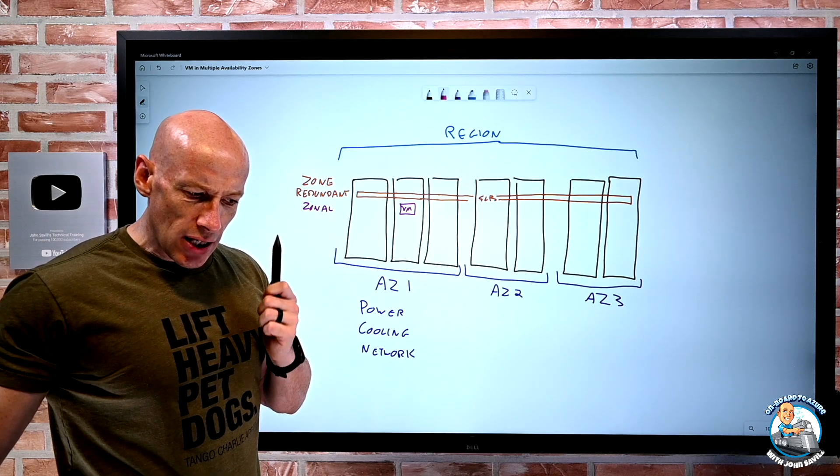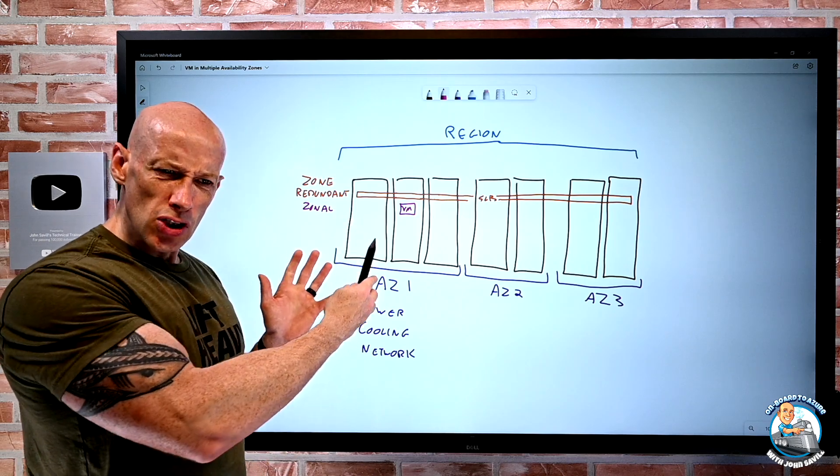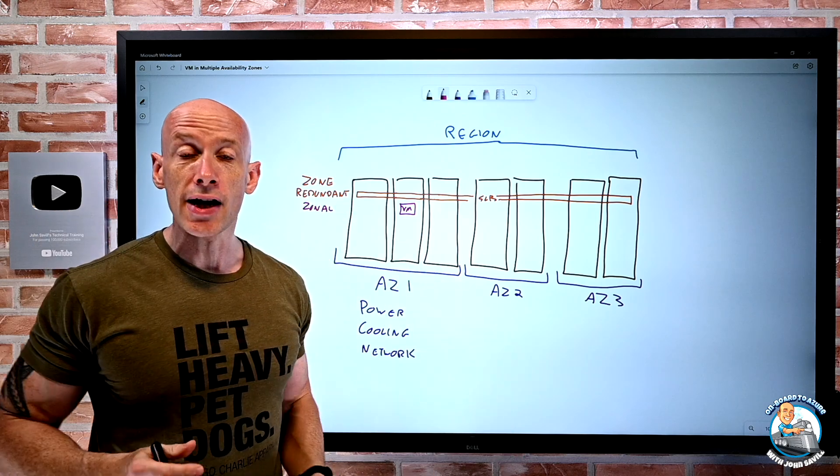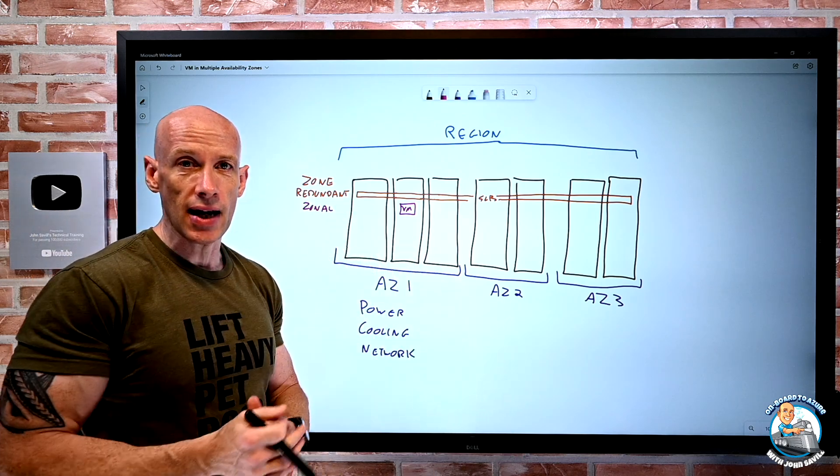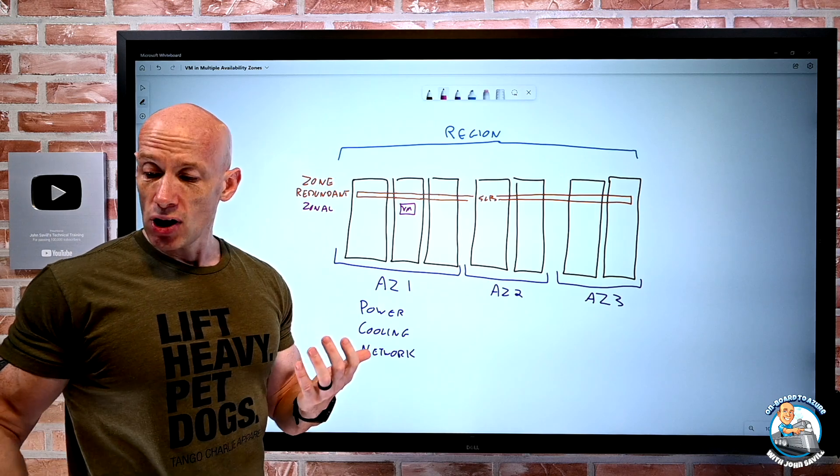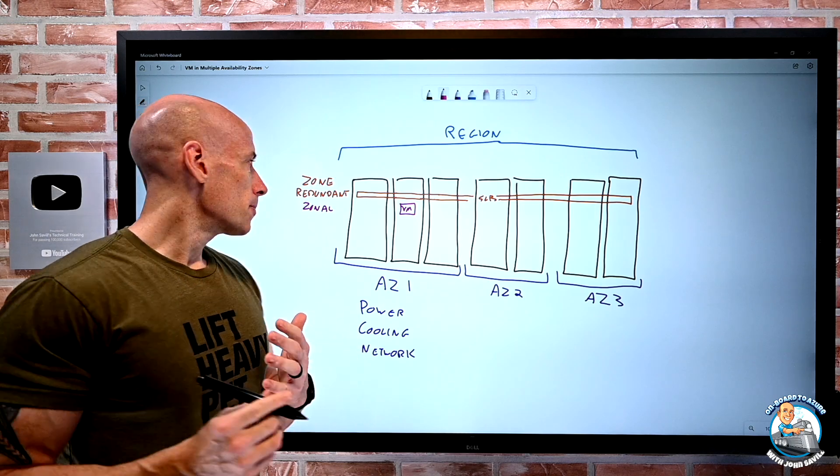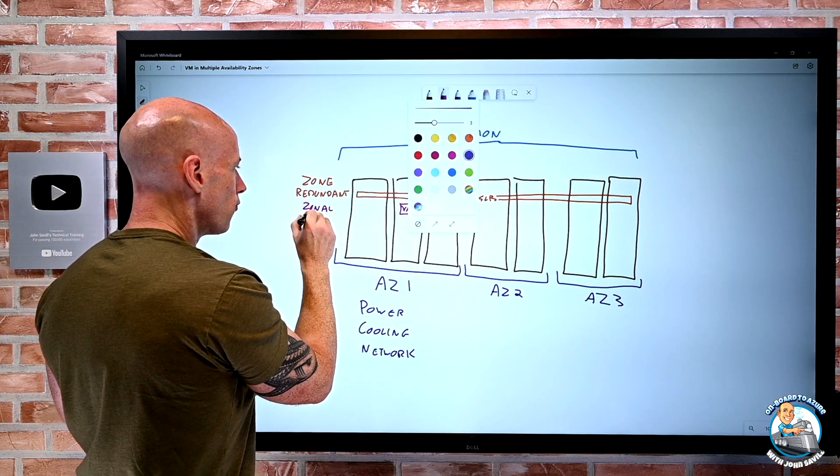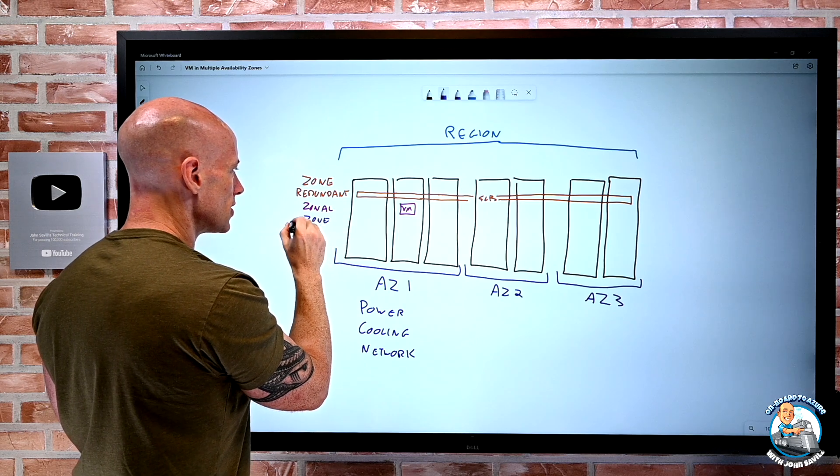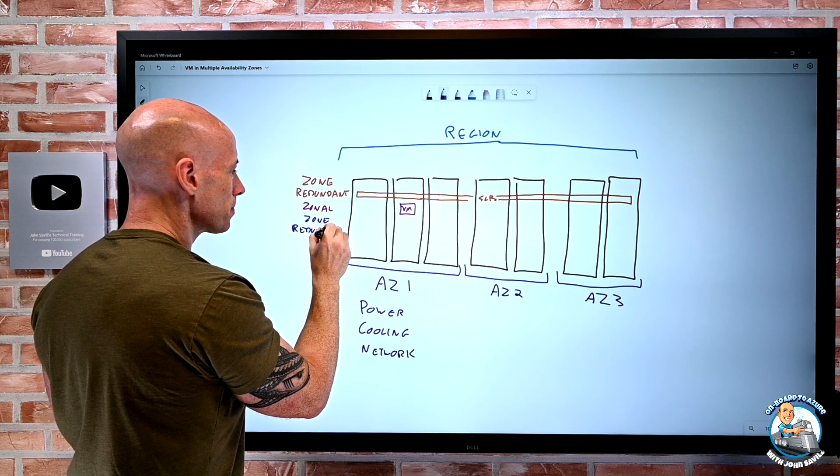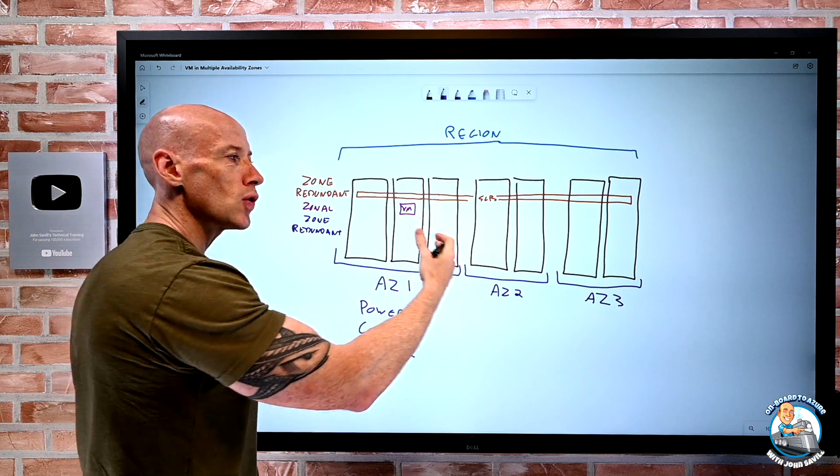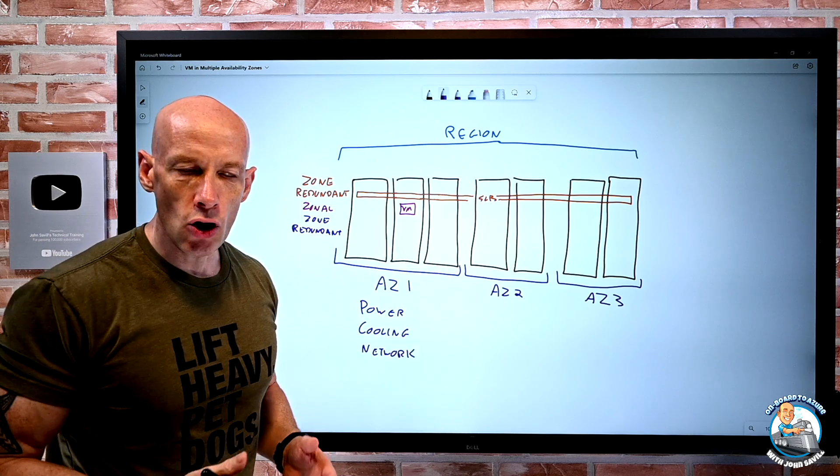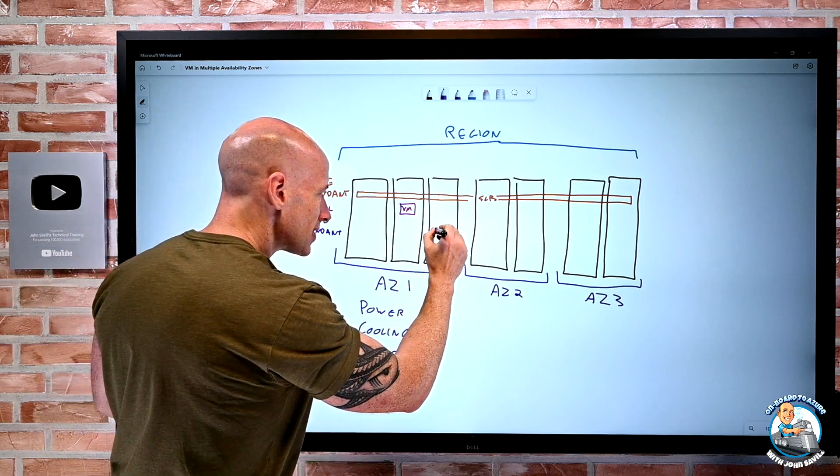So then how do I think about doing zone redundant for compute services? So I know I can do it. I can create a VM scale set, zone redundant. I can create an AKS node pool, which sits on top of a VM scale set. I can do an app service plan. How does this work? Well, so if I now go back and think about zone redundant for my compute services, how does it do it? Well, it has to create an instance in each of the zones. If it was a VM scale set or an AKS node pool, an app service plan, I have to have instances.